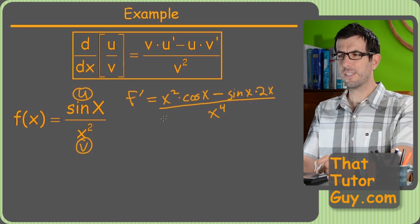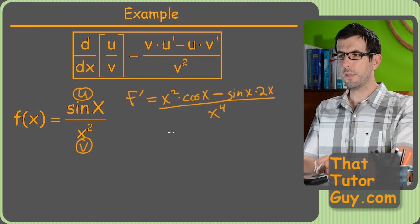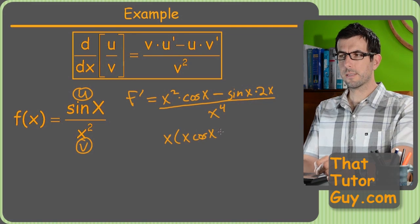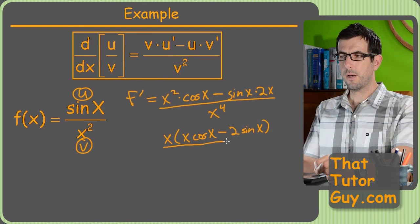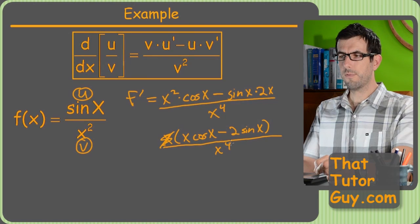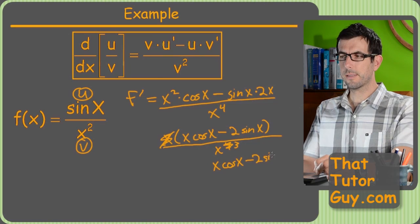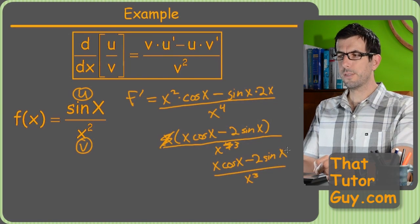So is there anything I can do with this? Not really. I mean, the only thing we could do is factor out an x from the top. So if we factor out an x, we get x times x cosine x minus 2 sine x, because remember, I just factored out an x, so that's where this x went. All over x to the fourth. So this x will cancel one of these. So I'll end up with x cosine x minus 2 sine x all over x cubed. So that's one answer.